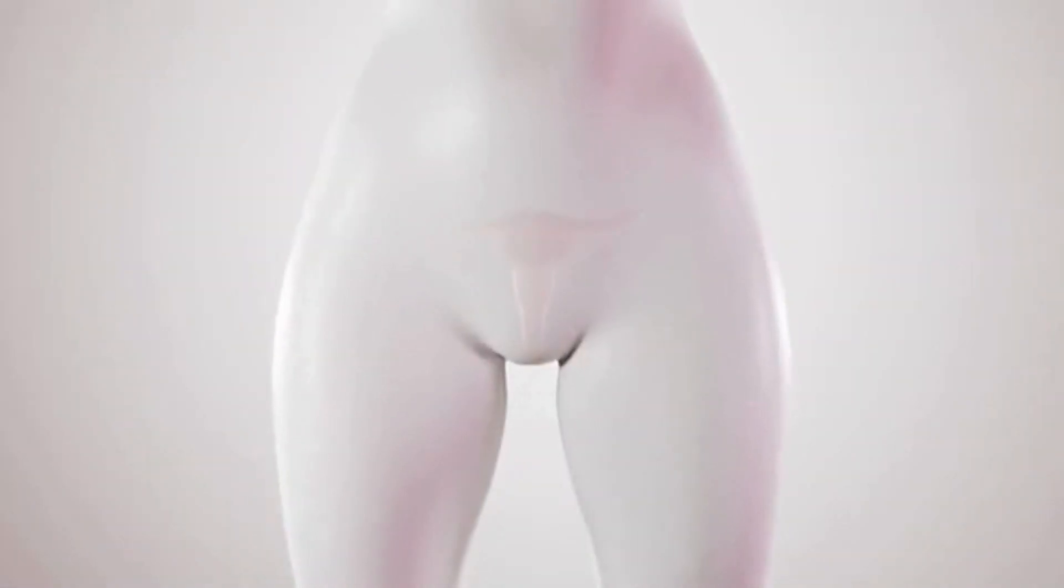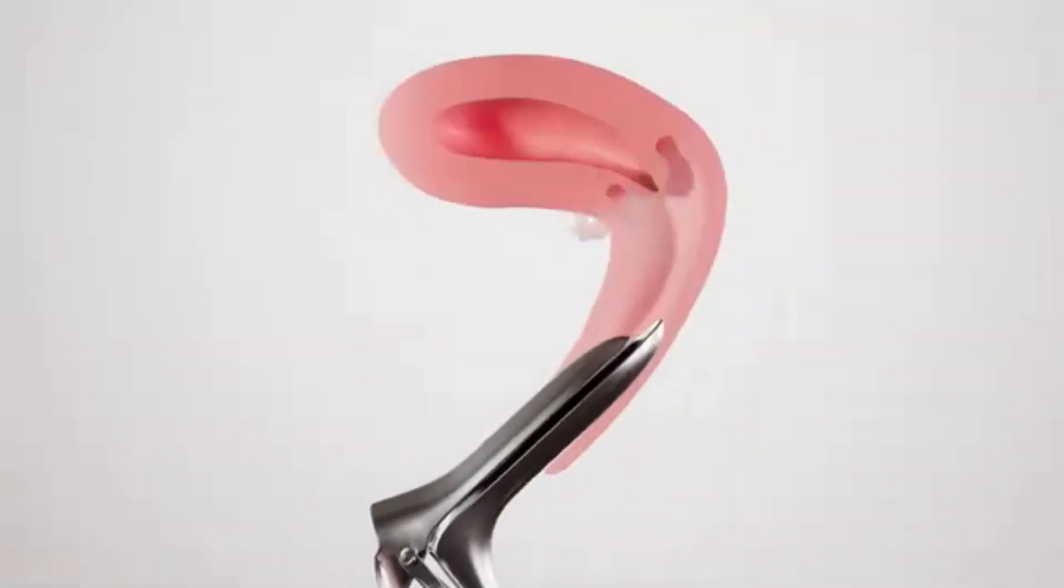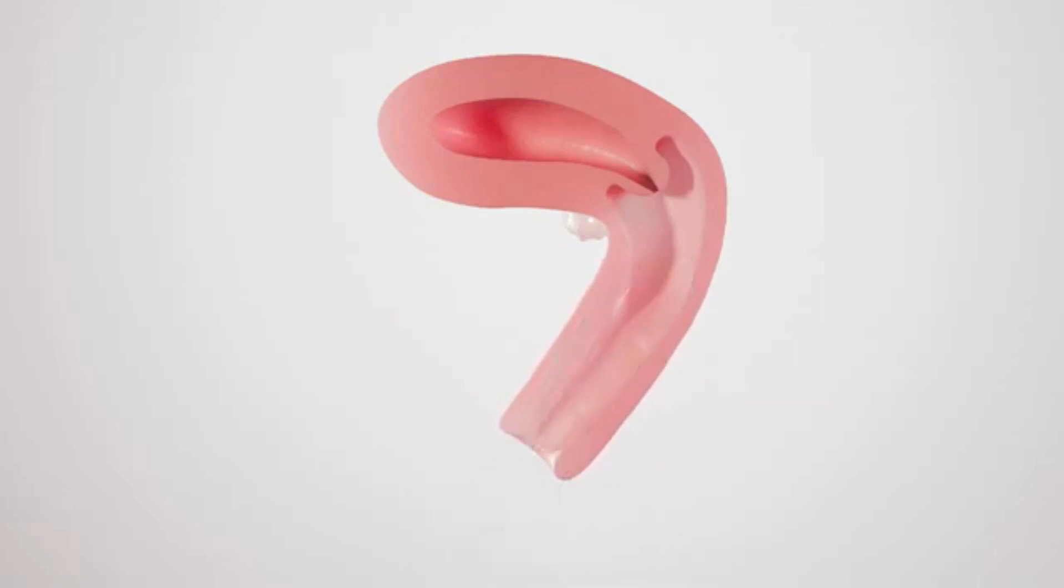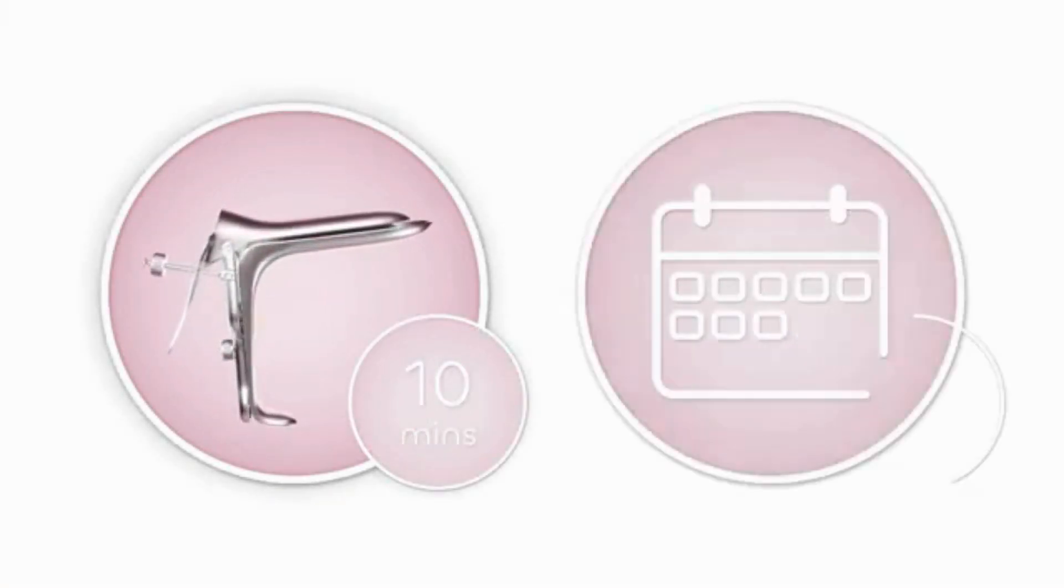The IUI procedure will be performed when the sperm sample is ready and prepared. A speculum will be inserted so the cervix can be seen. A soft, thin catheter is placed through the cervix into the uterus. The washed sperm is then injected through the syringe. The IUI procedure will only take about 10 minutes. The entire appointment takes about 30 minutes.